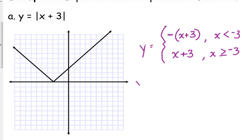So, I do want to simplify this though. Distribute that negative in the first one. So, negative x minus three when x is less than negative three, and x plus three when x is greater than or equal to negative three. Let me go back to my picture here and relate what we wrote to the picture.